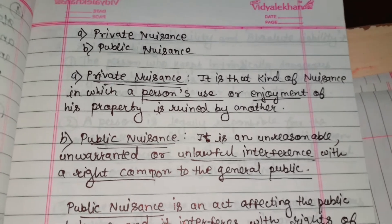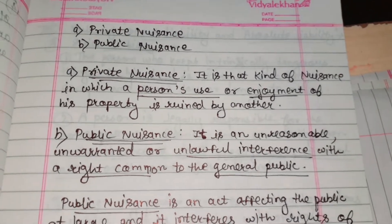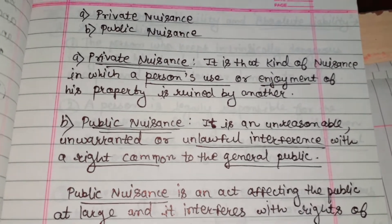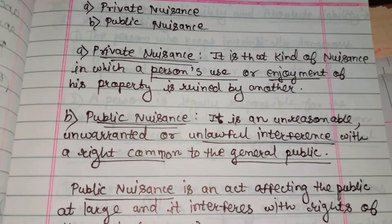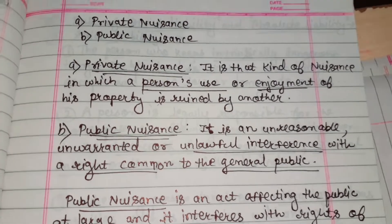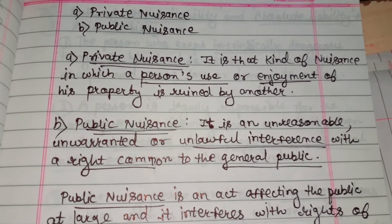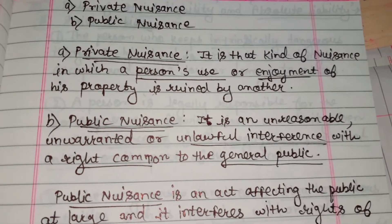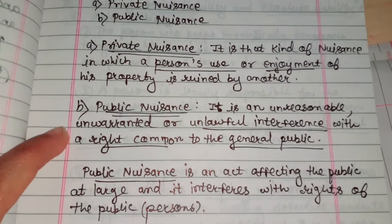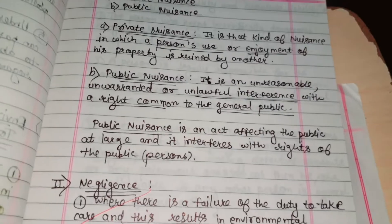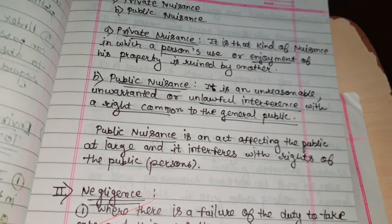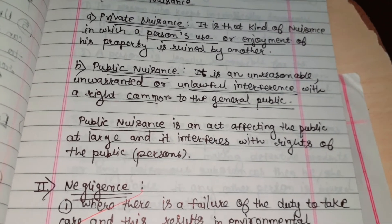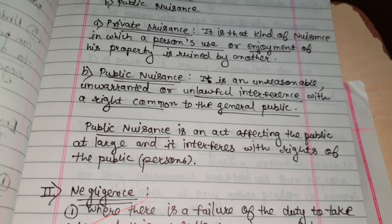Public nuisance is an unreasonable, unwarranted, or unlawful interference with the right common to the general public. Because of that nuisance, the whole public or a mass of people suffers. Public nuisance is an act affecting the public at large and it interferes with the rights of the public.